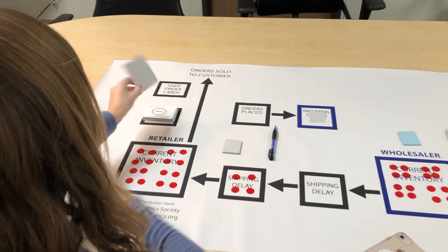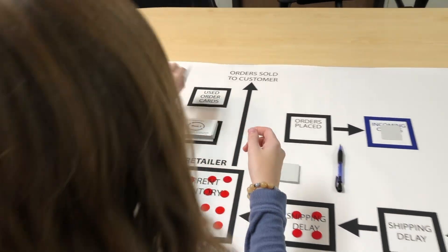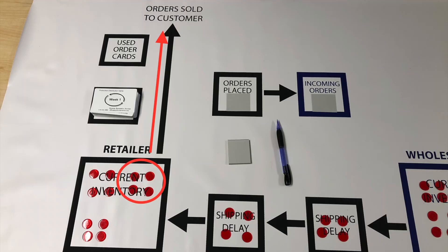The retailer looks at their weekly order card and then takes the needed amount of chips from their current inventory and pushes them up to the customer.